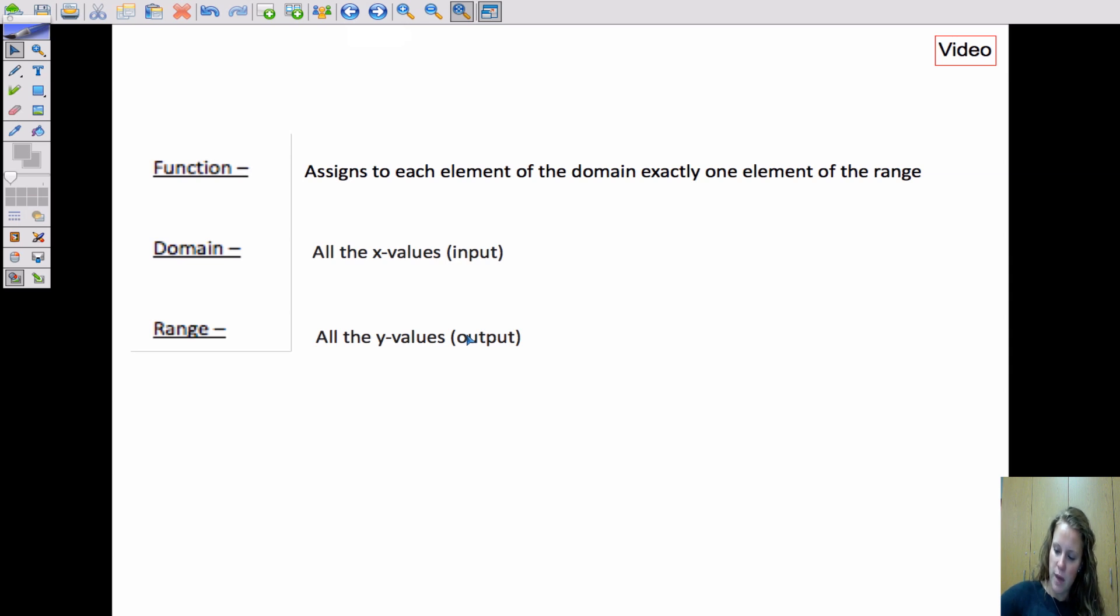So if you think about it, the domain, what makes a function a function, is that the domain, each x value, only has one y value. So we'll talk about what's called a vertical line test. Something like this, where each y value can have multiple x values, is okay, but each x value cannot have multiple y values.